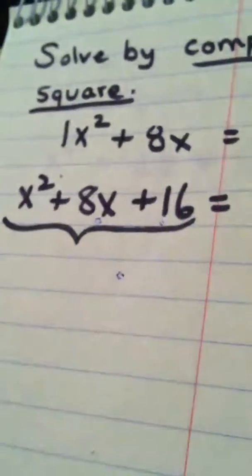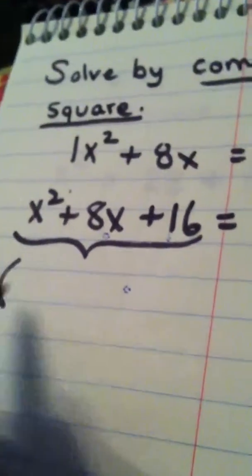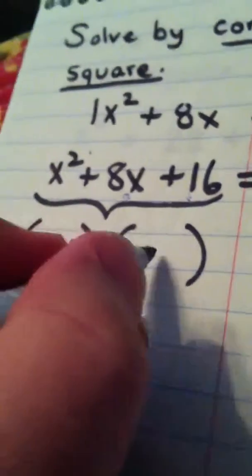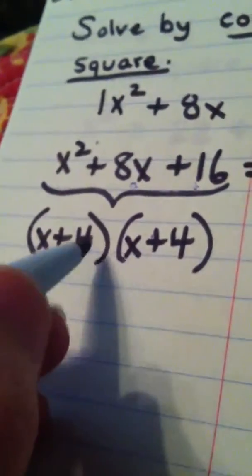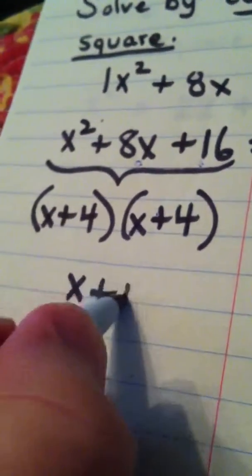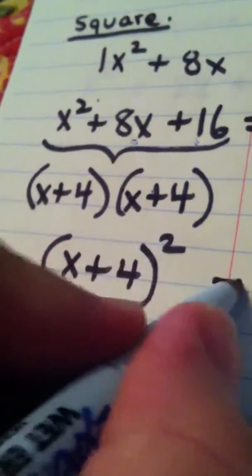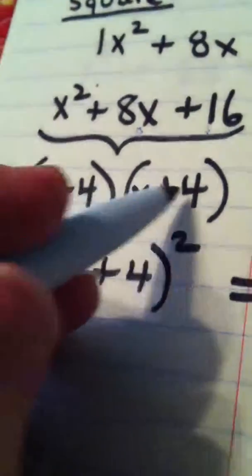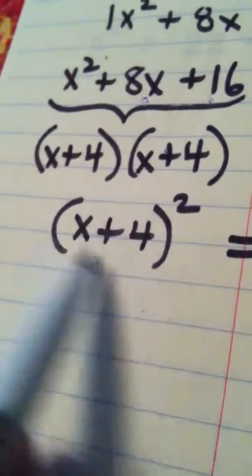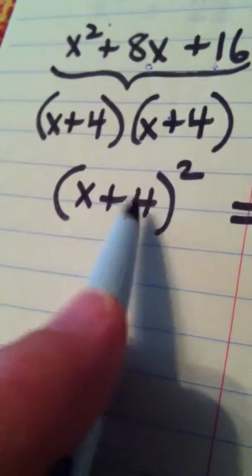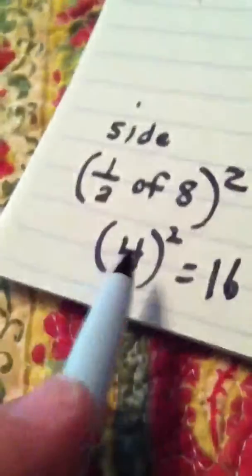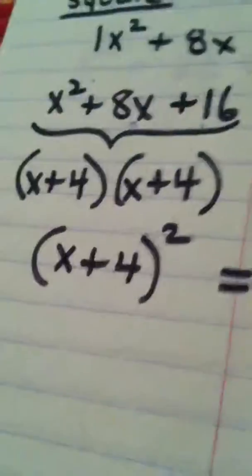Now, this side should factor as a perfect square. If you factor it, you get x and x, and a plus 4 and a plus 4. You can see that you get the 8 in the middle: 4x plus 4x gives 8x. This is actually (x + 4) quantity squared. One shortcut: by completing the square you've made this a perfect square, so the number that goes here is always the number from the half-of-b step. Half of 8 was 4. If the original was negative, it would be negative here.